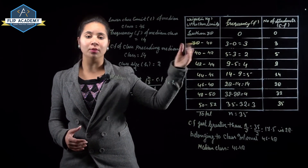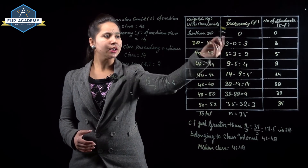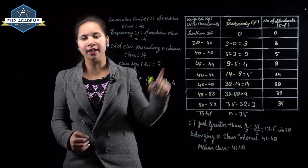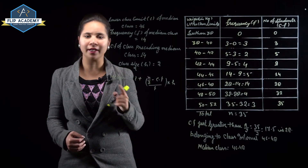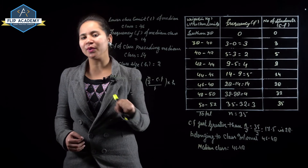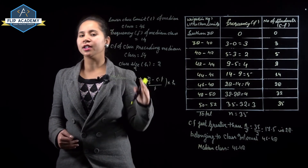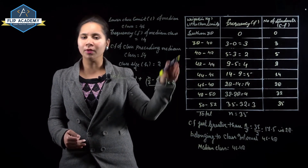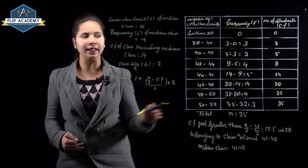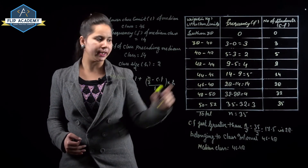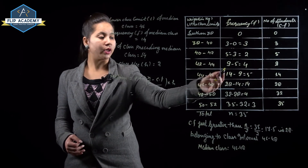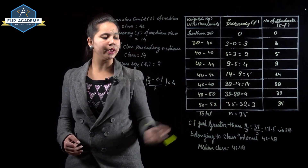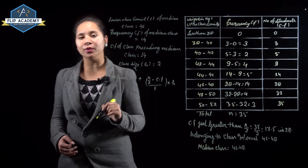To find individual frequencies from cumulative frequencies: the first class frequency stays as is (0). Then subtract consecutive cumulative frequencies: 3−0=3, 5−3=2, 9−5=4, 14−9=5, 28−14=14, 32−28=4, and 35−32=3.